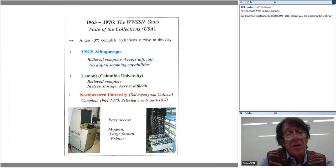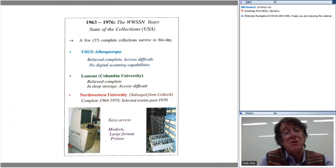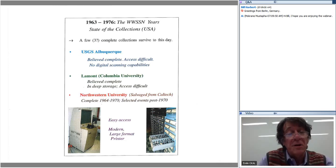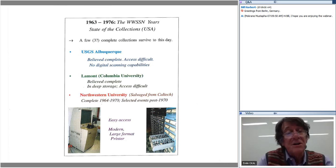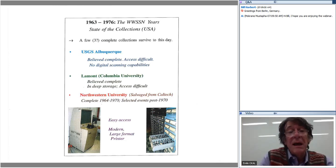The second collection is at Lamont, a laboratory of Columbia University. It is very complete, but in deep commercial storage and somewhat difficult to access. I was very fortunate that Northwestern University agreed to salvage the collection from Caltech, which was earmarked for disposal and shredding. This collection is now hosted at Northwestern University. The access is academic and perfectly accessible — all you have to do is get in touch with me. We have a modern large-format printer allowing printing at 18 by 24 inches, and a digitizing table for hand digitizing records.